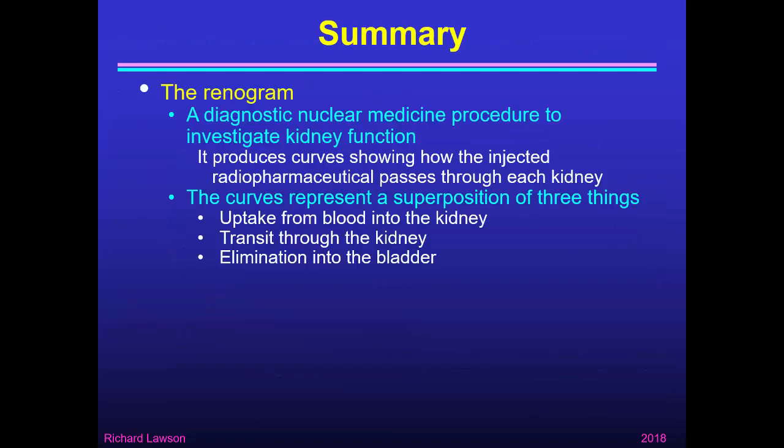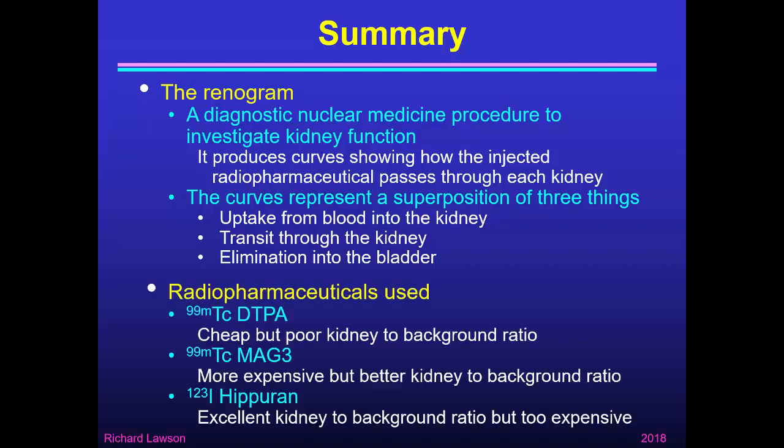In summary: the renogram is a diagnostic nuclear medicine procedure to investigate kidney function, producing curves showing how the injected radiopharmaceutical passes through each kidney — representing uptake from blood into the kidney, transit through the kidney, and elimination into the bladder. Regarding radiopharmaceuticals: technetium DTPA is cheap but has poor kidney-to-background ratio; technetium-labelled MAG3 is more expensive but has better kidney-to-background ratio; whereas I-123 Hipuran has an excellent kidney-to-background ratio but is too expensive for routine use. That's the end of this talk on models of the renogram.